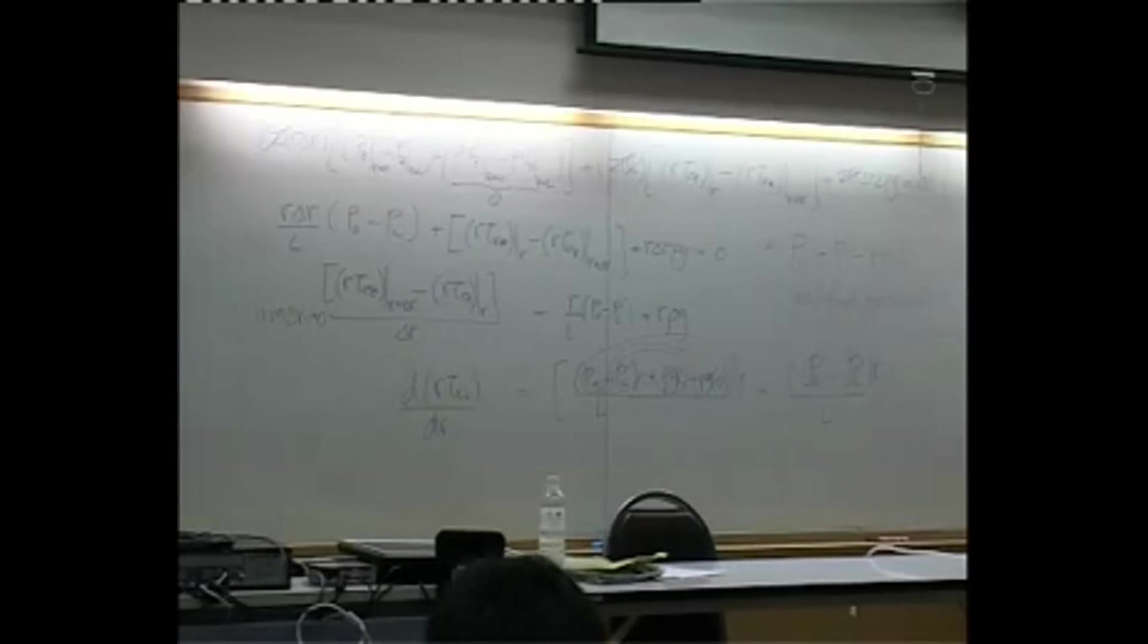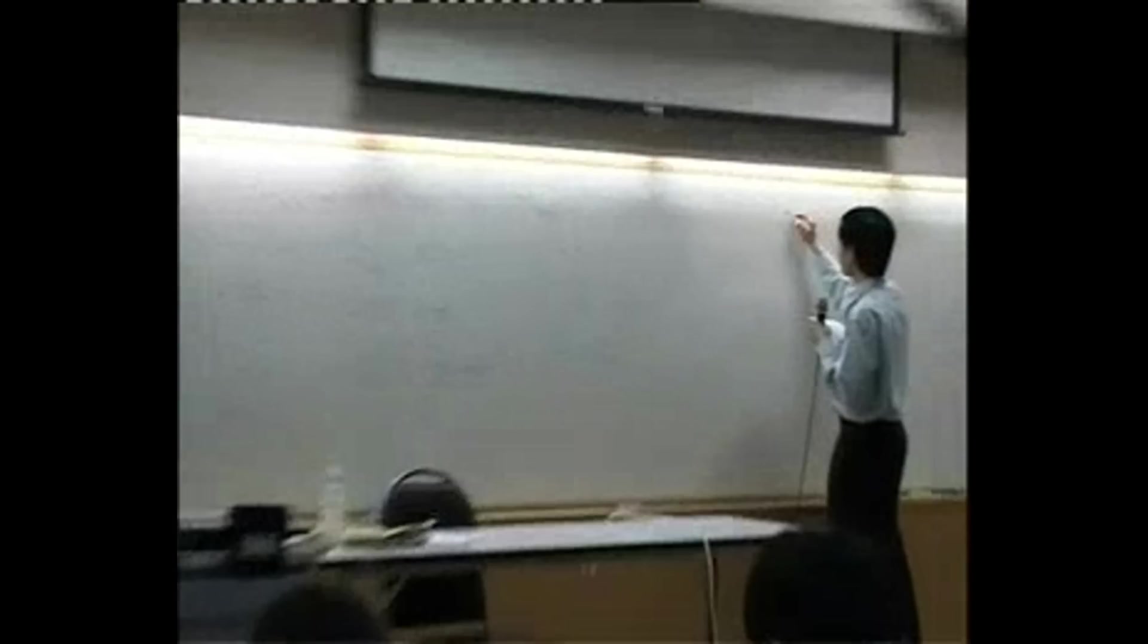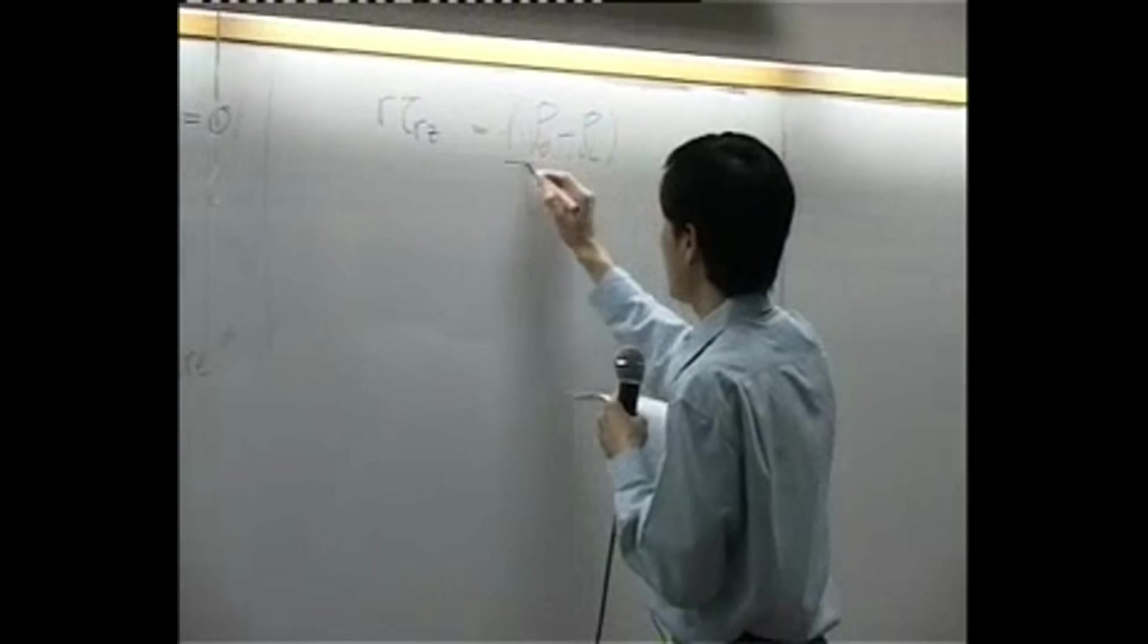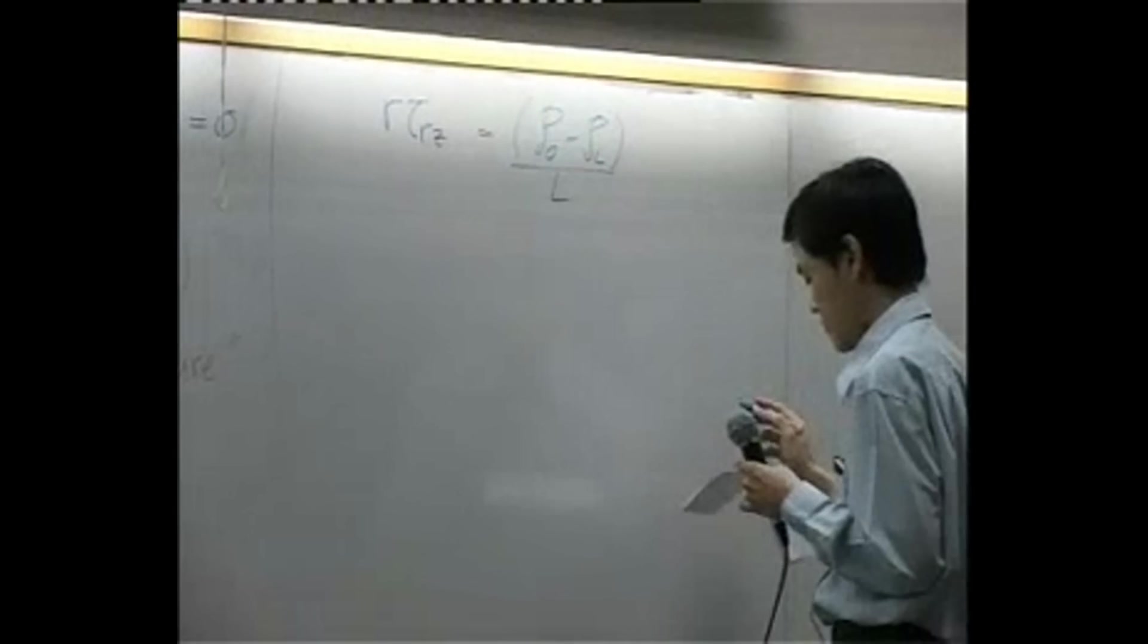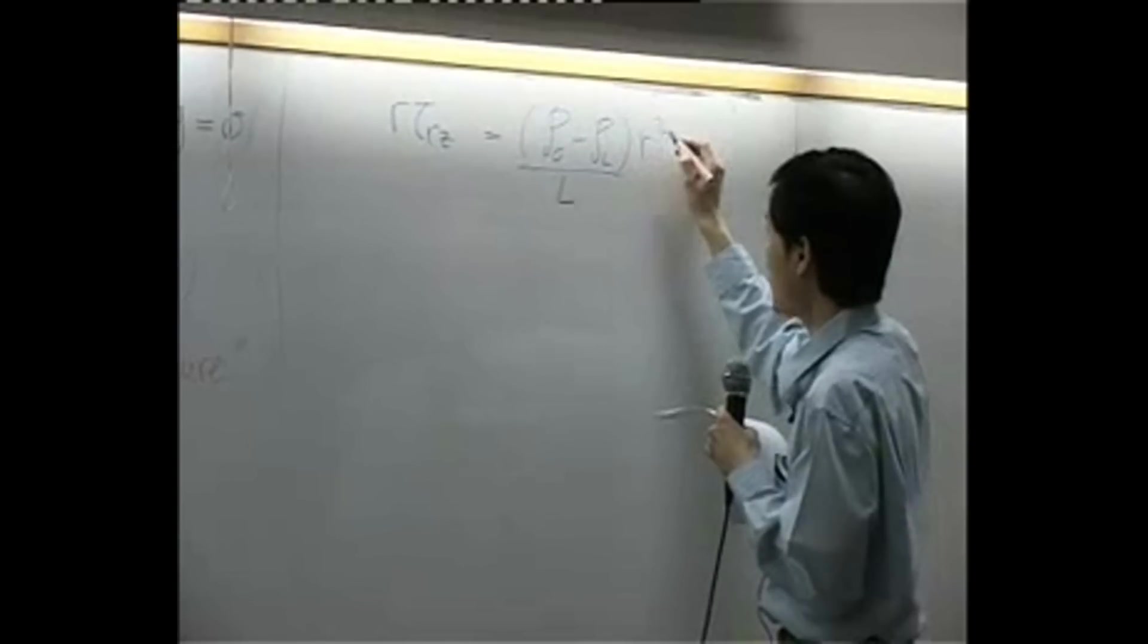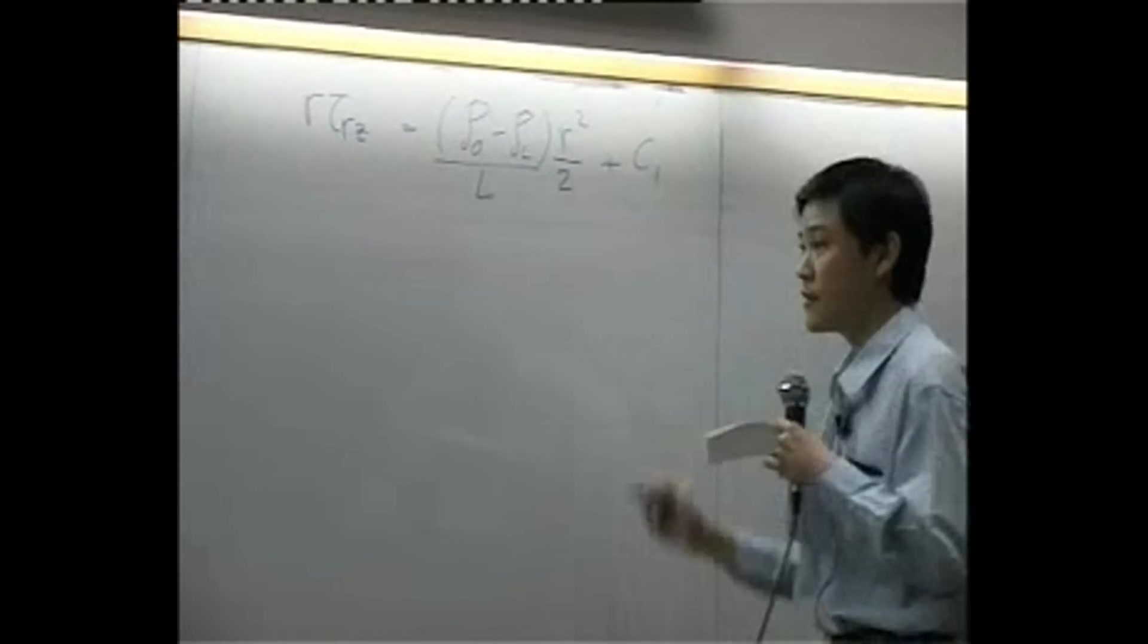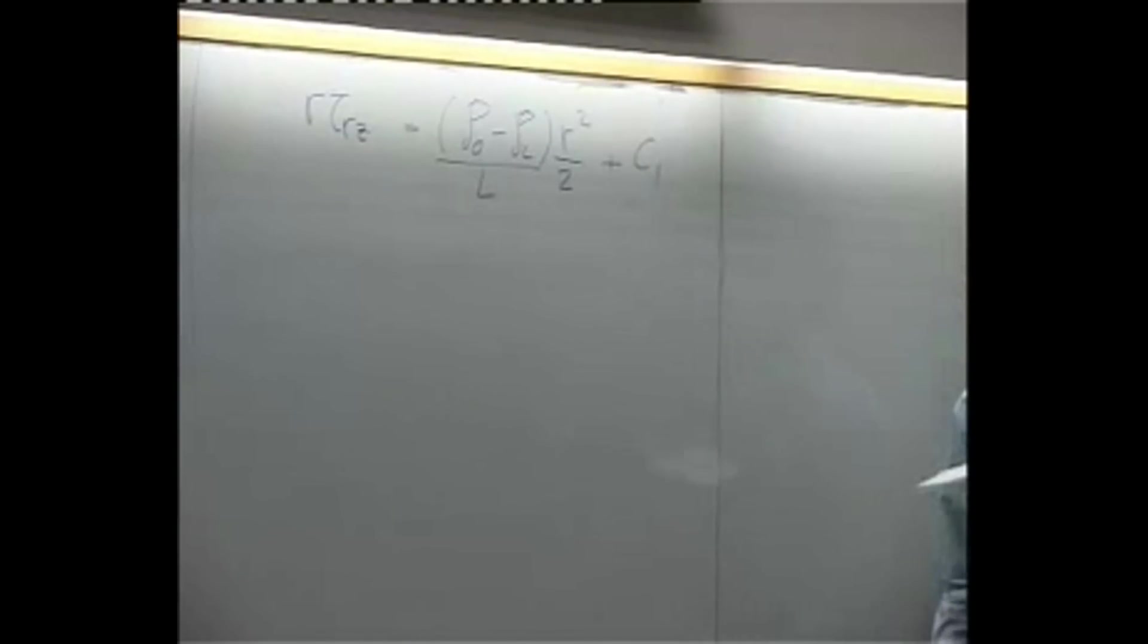R tau Rz equals modified pressure at 0 minus modified pressure at L, multiplied by R squared divided by 2, plus another integration constant C1.